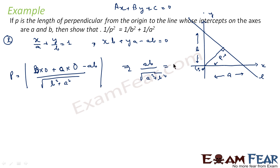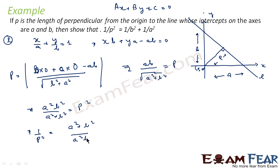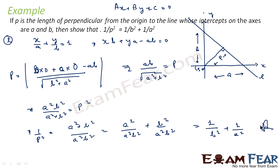Squaring the result, p² = a²b² / (a² + b²). Now, to prove 1/p² = 1/a² + 1/b², we take 1/p² = (a² + b²) / (a²b²) = a²/(a²b²) + b²/(a²b²) = 1/b² + 1/a². Hence proved. We knew the x and y intercepts, formed the equation of the line, found the perpendicular distance from the origin equal to p = ab/√(a² + b²), squared it, and verified the result.